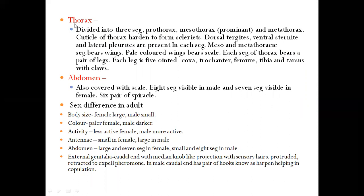The second part of the adult body is the thorax, divided into three segments: prothorax, mesothorax, and metathorax. The cuticle of the thorax hardens to form sclerites: the dorsal tergites, ventral sternites, and lateral pleurites. The mesothorax and metathorax segments bear wings. The pale-colored wings bear scales. Each segment of the thorax bears a pair of legs. In silk moth, three pairs of legs are present, and each leg consists of six parts: coxa, trochanter, femur, tibia, and tarsus, with the tarsus bearing claws.